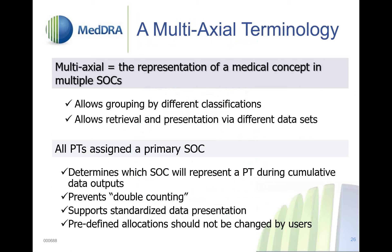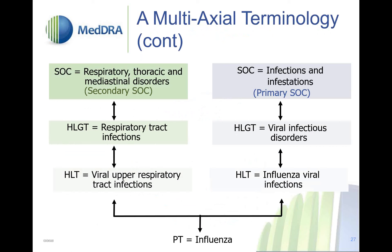You can always customize how you retrieve and analyze your data using secondary SOC links. Here's an example of a multi-axial term: influenza can be linked to more than one SOC because it has an infectious etiology (infection SOC) and is also a respiratory manifestation (respiratory SOC). Because infection is one of the three primary SOC exceptions, the primary SOC for influenza will be infections.